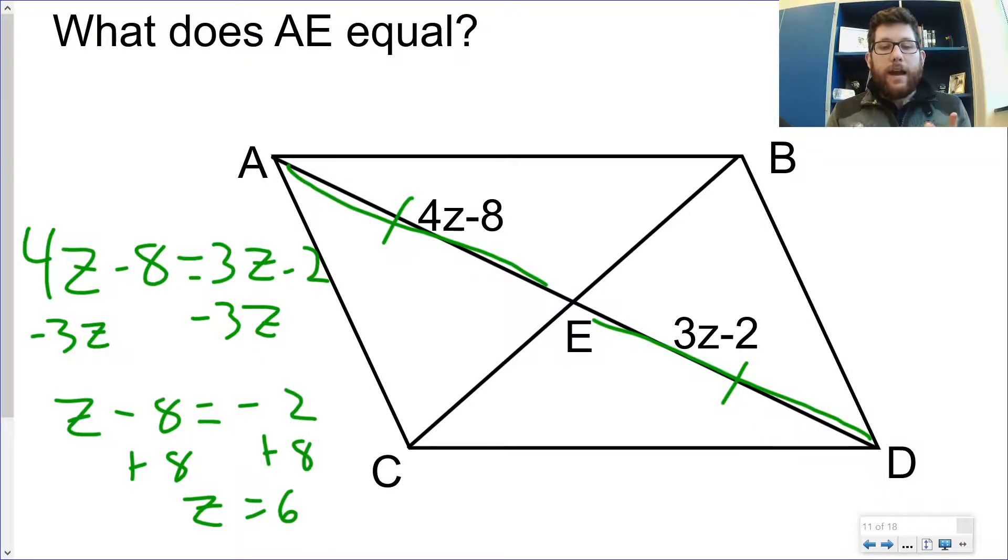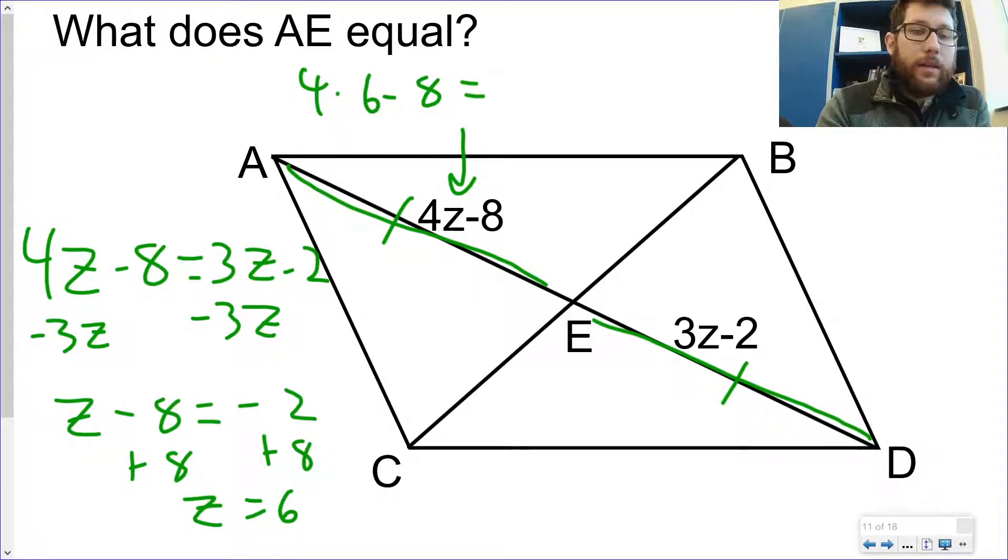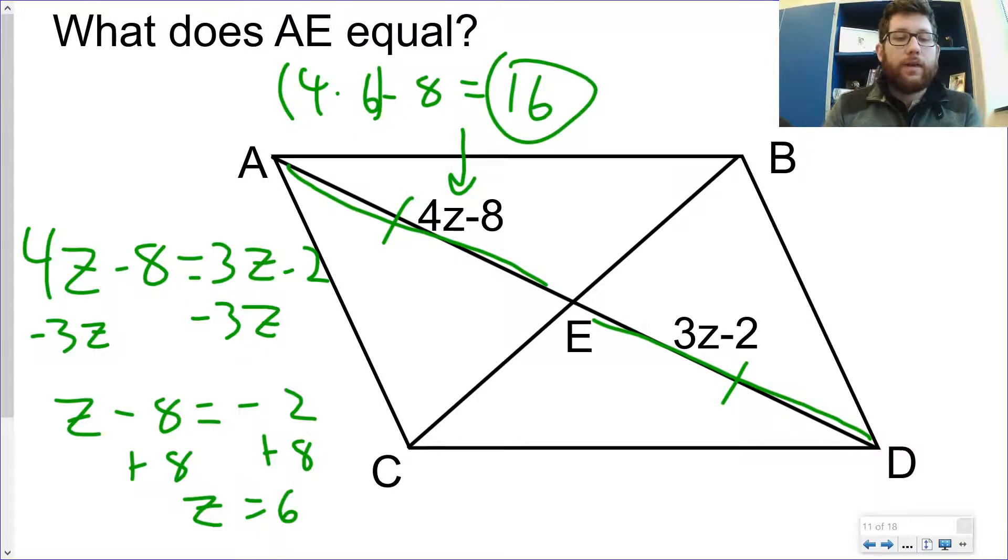So that's z. Now I need to solve for AE. So I'm going to plug in right here. I've got 4 times 6 minus 8. I'm going to do my order of operations. 4 times 6 first. I get 24 minus 8, which comes out to equal 16 as a final answer.